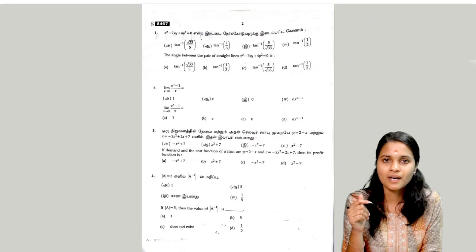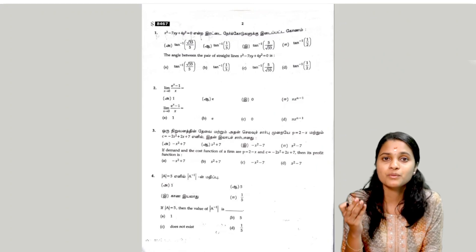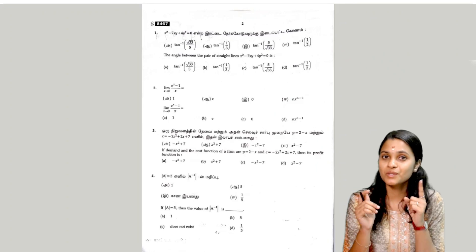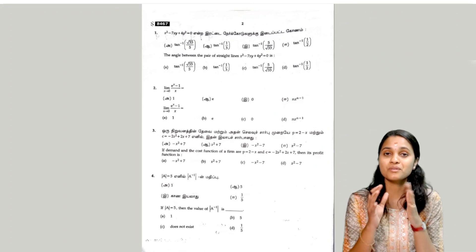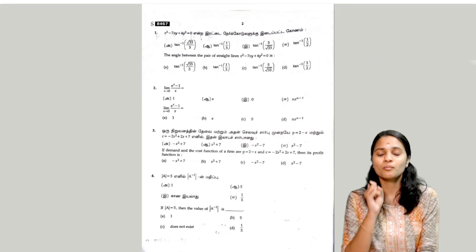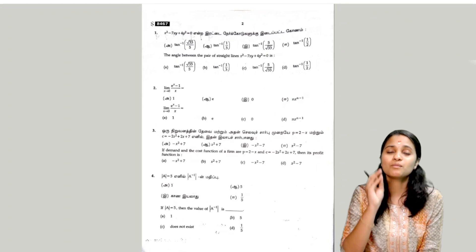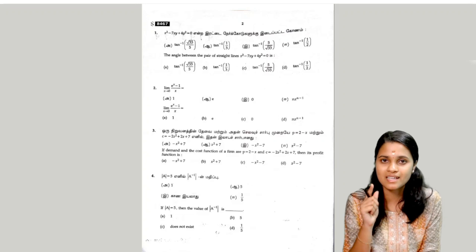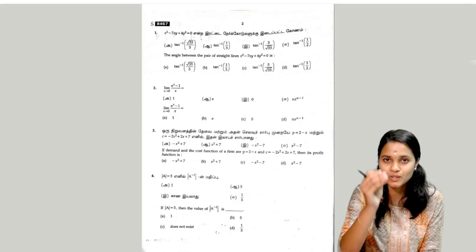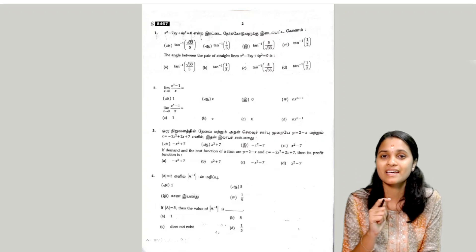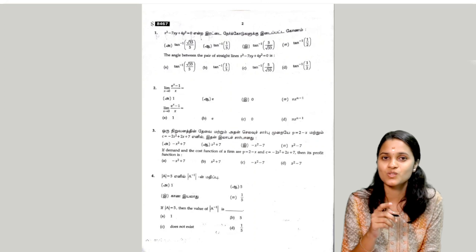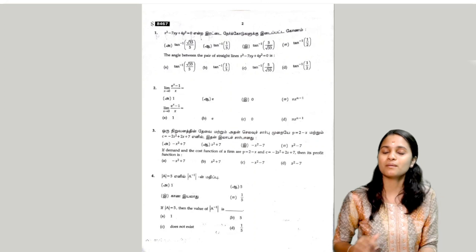So the first question is the angle between the pair of straight lines. In this question, we will discuss the 1-mark rapid fire round. So maximum 2 marks, 3 marks, 5 marks and 1 marks are all discussed. So 1 or 2 questions are the same. If you look at all of them, we will check all the answers.